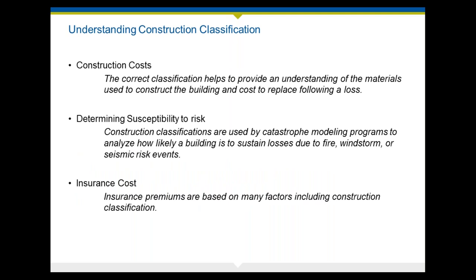So why is it important to get the right classification? We're trying to classify it correctly so we have a very good idea of how a structure will perform in certain instances — fire, earth movement, windstorm, water damage — all of those things are affected. We'll talk a little bit about catastrophic exposures and geography, because there are very different construction techniques on the West Coast as opposed to the Southeast, the Northeast, and the Midwest. And finally, insurance costs — we've got to get it correct in order to make sure that we're charging the right premium. Pretty simple.